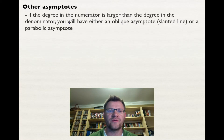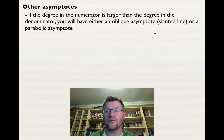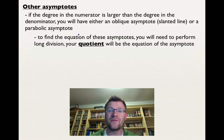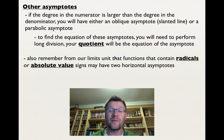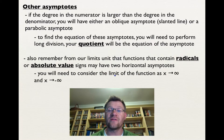If the degree in the numerator is larger than the degree in the denominator, you could have an oblique asymptote — a slanted line that's neither vertical nor horizontal — or even a parabolic asymptote. To find the equation of these special asymptotes, you need to perform long division. The quotient, which is your answer, will be the equation of the asymptote; the remainder doesn't matter. Also remember from our limits unit that functions containing radicals or absolute value signs may have two horizontal asymptotes, so you'll need to consider the limit as x approaches both infinity and negative infinity.